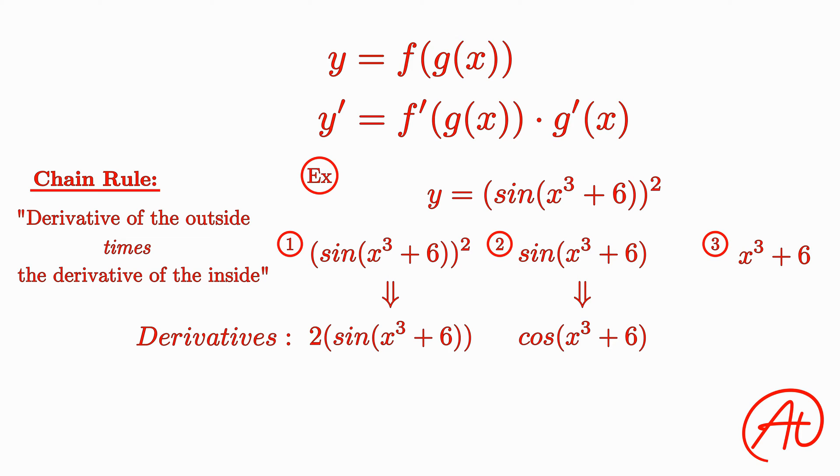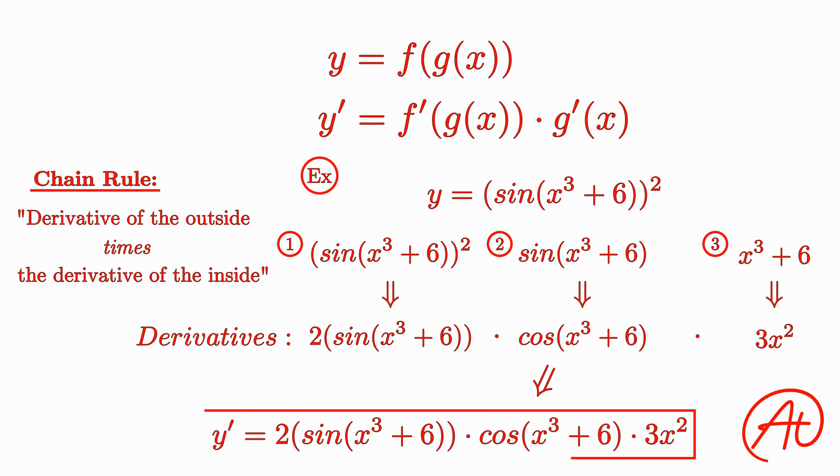Finally, taking the derivative of the third and most inside function, we get 3x squared. Now all we have to do is multiply each of these derivatives together to get the final result of y prime equals 2 times sin(x cubed plus 6) times cos(x cubed plus 6) times 3x squared.